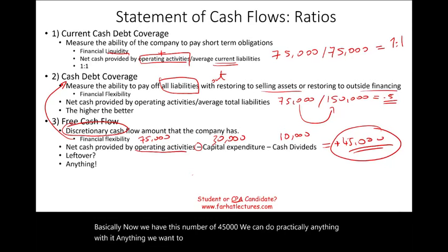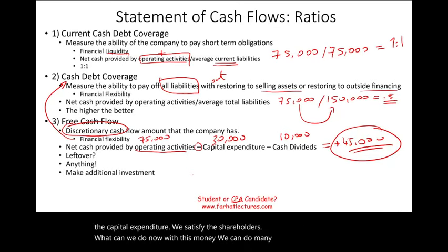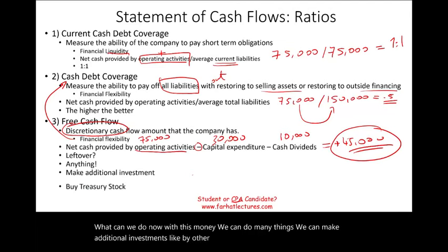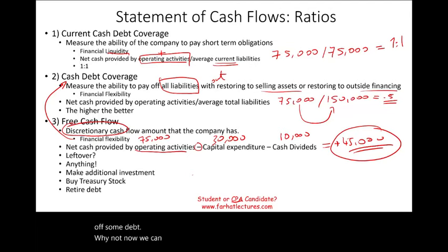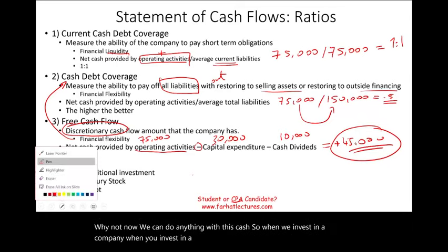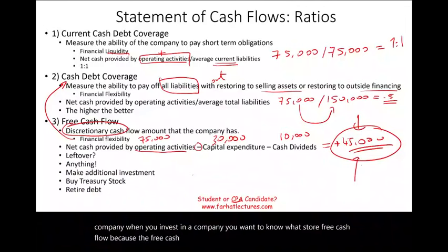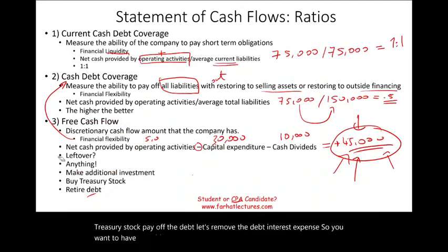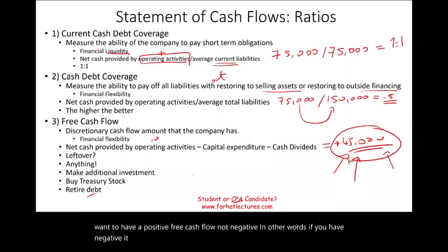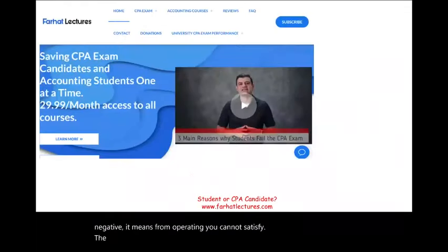The $45,000 is good — you want this number to be positive. With free cash flow, we can make additional discretionary investments, buy back treasury stock, or pay off some debt. When you invest in a company, you want to know their free cash flow because it represents the icing on the cake for investors. A negative free cash flow means from operations you cannot satisfy capital expenditure and dividends.